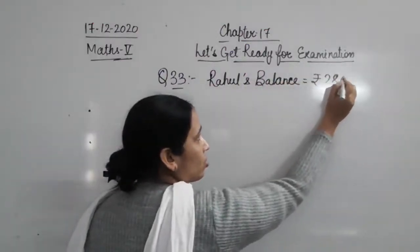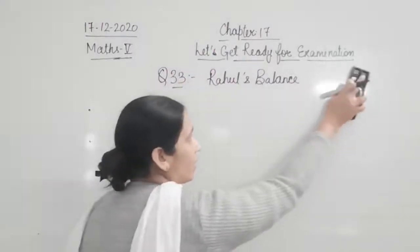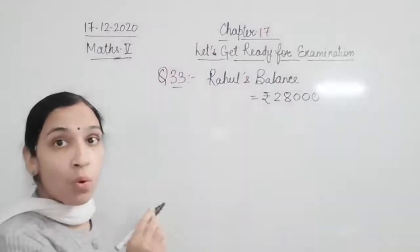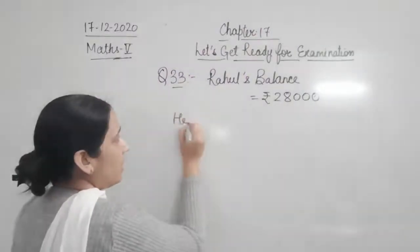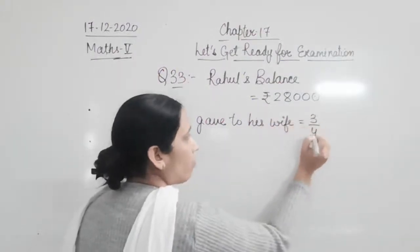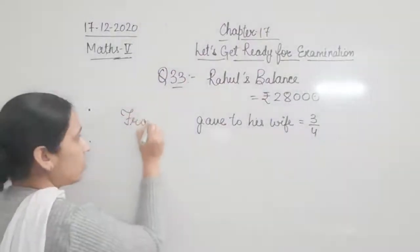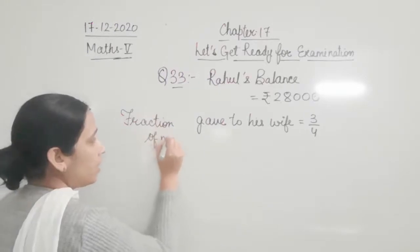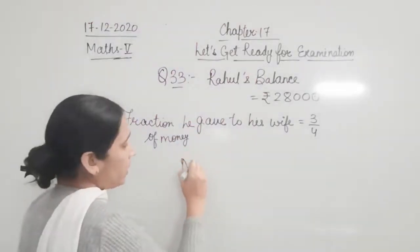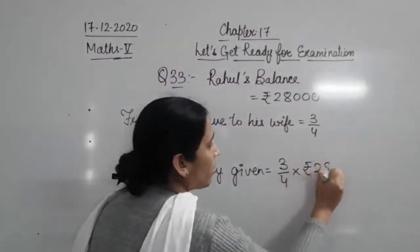The bank balance of Rahul is rupees 28,000. Now he gave to his wife a fraction of money — that is 3/4. You have to write this fraction of money he gave to his wife, which is 3/4. So the sum of money he gave to his wife is 3/4 multiplied by rupees 28,000.